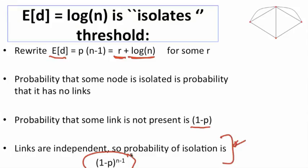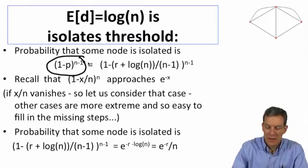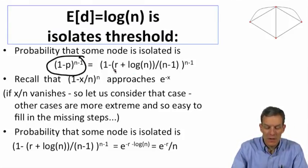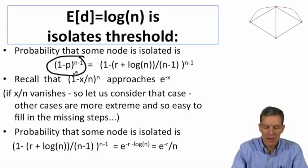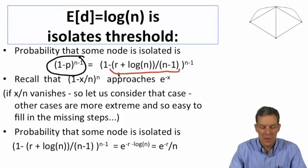We want to show that if P is small enough, then you're going to have a high probability of nodes being isolated, and if P is large enough, then you're not going to have any probability of this happening. The probability that you're isolated is (1 - P)^(N-1). Now from the way we wrote P — recall the expected degree was R plus log(N) — the expected P is just that divided by N minus 1. So (1 - P)^(N-1) is just (1 - (R + log(N))/(N-1)) raised to the N minus 1.